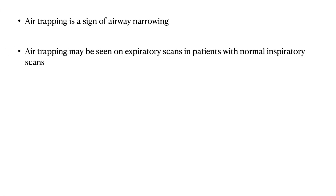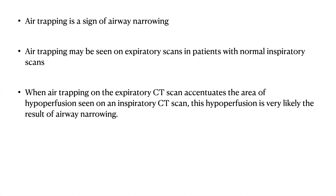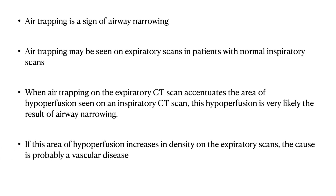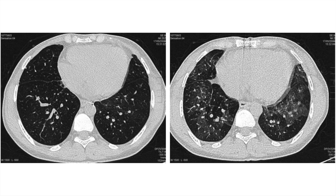The second type of decreased attenuation is air trapping. Air trapping is a sign of airway narrowing. Air trapping may be seen on expiratory scans in patients with normal inspiratory scans. When air trapping on expiratory CT scan accentuates the area of hyperperfusion seen on an expiratory film, this hyperperfusion is very likely to be a result of airway narrowing. If this area of hyperperfusion increases in density on an expiratory scan, the cause is most probably vascular. Here we see multiple areas of air trapping, seen in patients with graft versus host disease.